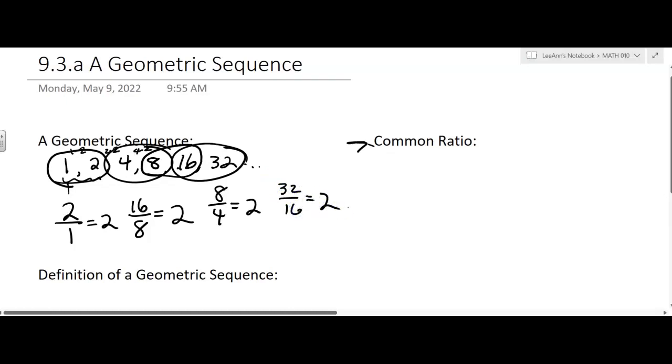And so we call this the common ratio, and it's symboled with R. In our case, for this sequence, R equals 2.